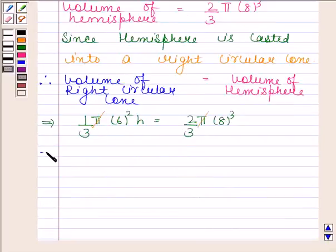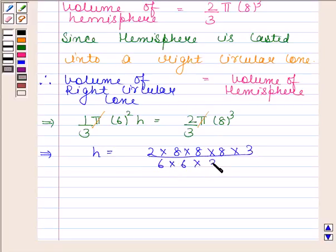So this implies h equals 2 × 8 × 8 × 8 divided by 6 × 6 × 3. I will cancel 3 from both numerator and denominator. 2 divided by 6 gives us 1/3. Canceling 8 by 6 we get 4/3. So now we have 256 divided by 9, and this is equal to 28.5 cm.